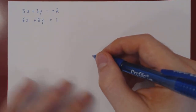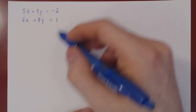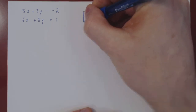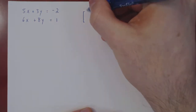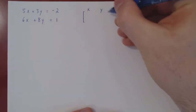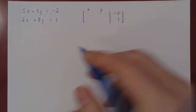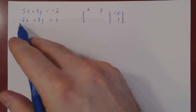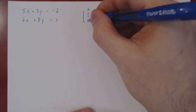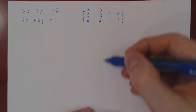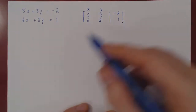Consider a very simple linear system: 5x plus 3y equals negative 2, and 6x plus 8y equals positive 1. If you were to solve this linear system, we would look at the augmented matrix. The first column holds the coefficients of x, the second column the coefficients of y, with a vertical bar replacing the equal signs. The constant terms are negative 2 and 1, and the coefficients are 5, 3, 6, 8. You would simply row reduce the augmented matrix to find the solution.